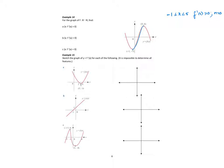Whereabouts is the gradient negative? That's a negative slope there, and a negative slope there. So we're going to say if the numbers are less than negative 1, or if the numbers are greater than 5, the gradient f'(x) is negative. Where is it equal to 0? At those turning points. So at x equal to negative 1 and 5, f'(x) is equal to 0.